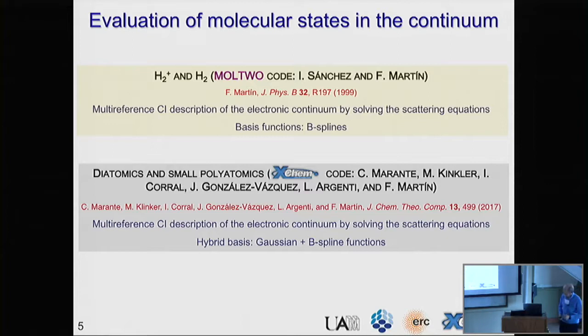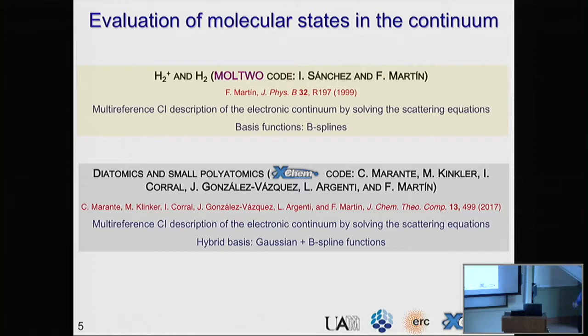For many years in our group, we were developing a tool that included electron correlation accurately. In the case of the hydrogen molecule, this is something we started more than 20 years ago. But today I will focus on a new development we have performed that basically performs calculations at the same level of accuracy but for much larger molecules — this is the X-GEN code. In a few words, this method gives you a multi-reference configuration interaction description of the electronic continuum of molecules by solving the scattering equations, and makes use of a hybrid basis formed by Gaussian and B-spline functions.